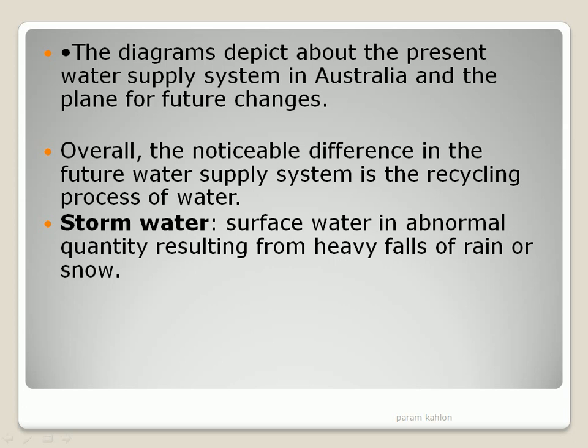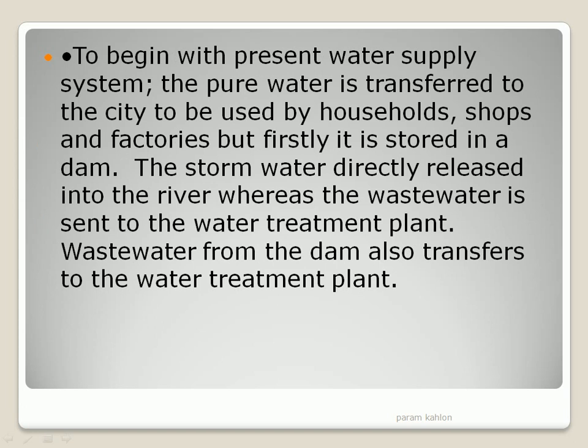The change has come from stormwater, meaning surface water in abnormal quantity resulting from heavy rainfall. To begin with the present water supply system, the pure water is transferred to the city to be used by households, shops, and factories, but firstly it is stored in dams. The stormwater is directly released into the river, whereas wastewater is sent to the water treatment plant. Wastewater from the dam is also transferred to the water treatment plant.